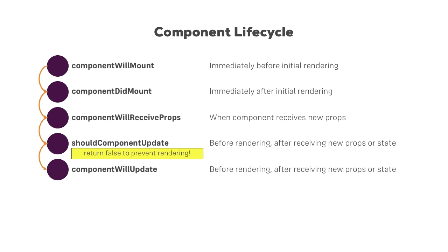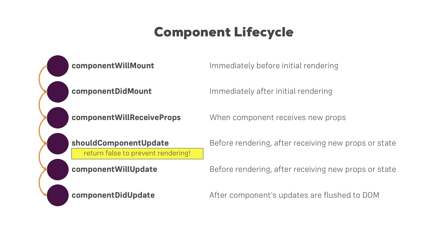We also have componentWillUpdate, which gets executed after shouldComponentUpdate returned true or at least didn't return false. componentWillUpdate is called before rendering but after new props or state were received. Then we have componentDidUpdate, which is executed after re-rendering the component — after it has actually been re-rendered and the actual DOM has been updated.